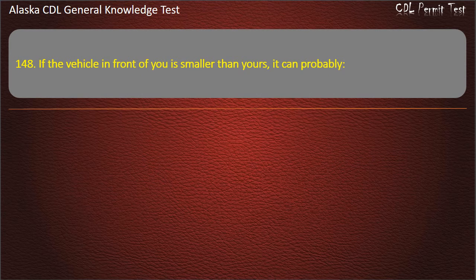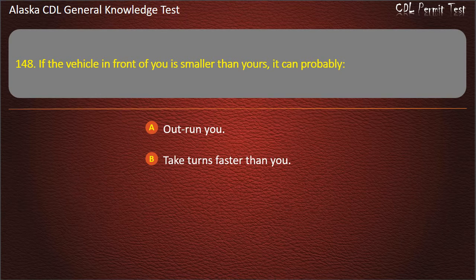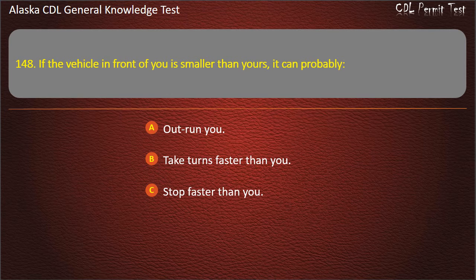Question 148. If the vehicle in front of you is smaller than yours, it can probably outrun you, take turns faster than you, or stop faster than you. Answer: Stop faster than you.